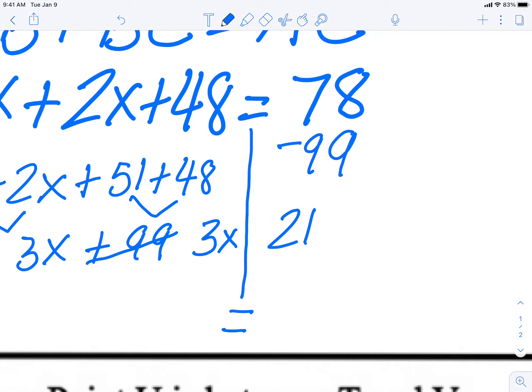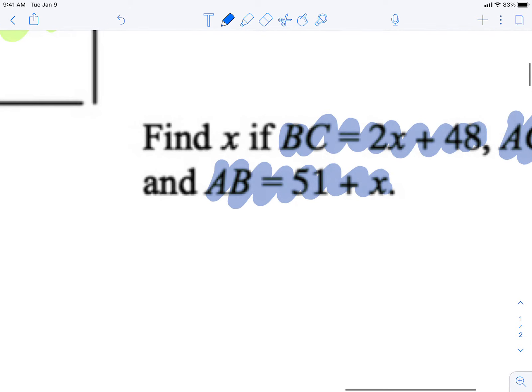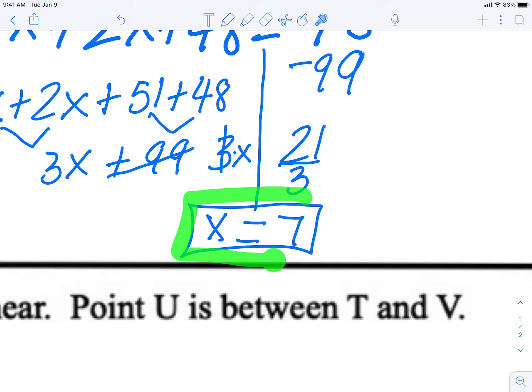Now I still have this 3x here, I'll write it over here so it could be next to my 21. And I know that 3x means 3 times x, so the opposite of multiplying is dividing by 3. So x is equal to 21 divided by 3 is 7. And there you go, look at that! This said find x, that was our goal, and we definitely found x. X is equal to 7.